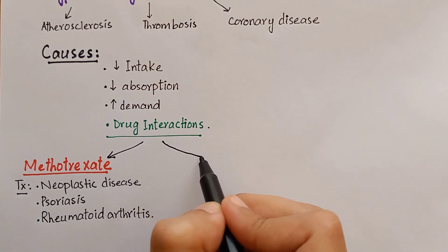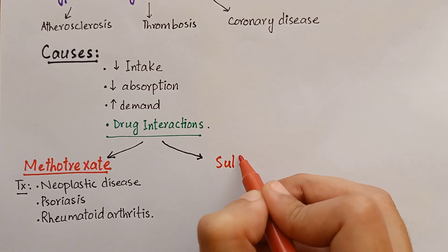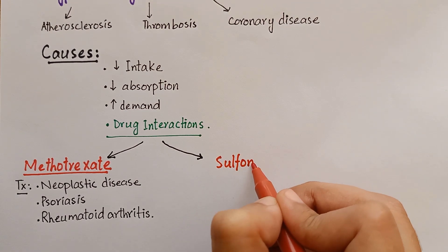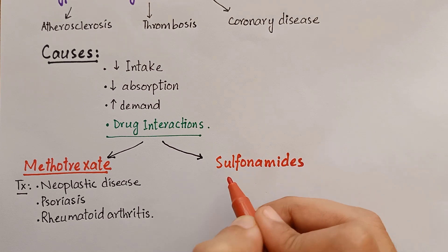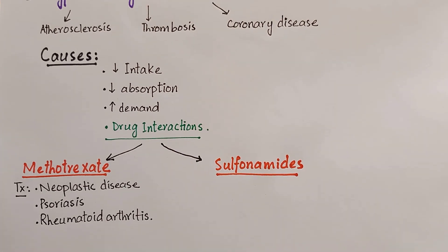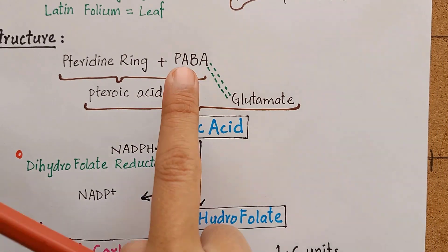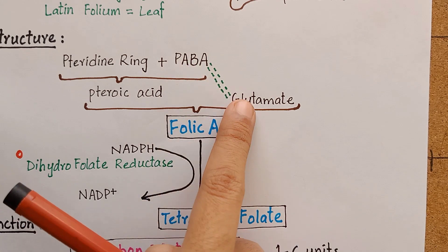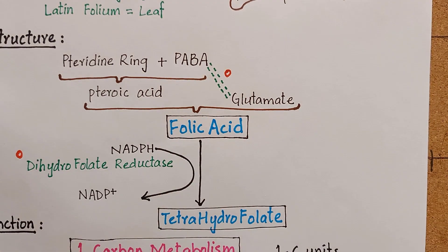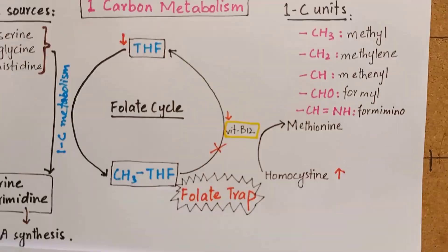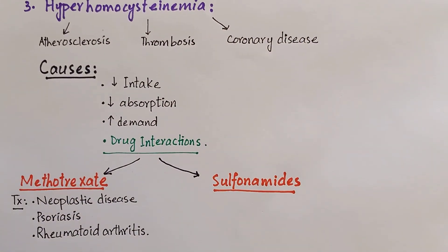There are anti-bacterial drugs called sulfonamides, which are structural analogues of para-aminobenzoic acid (PABA), that competitively inhibit the enzyme required for incorporation of PABA into the pteridine ring, thereby inhibiting the synthesis of folic acid.